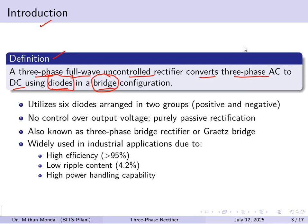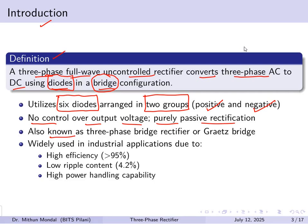When thyristors are used instead of diodes, we get a controlled rectifier. In this configuration, six diodes are arranged in two groups — one positive group and one negative group — with no control over the output voltage, giving pure passive rectification. This is also known as the three-phase bridge rectifier.